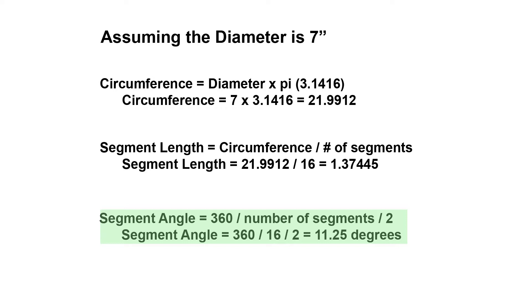This is because each segment will have two ends, which means there are actually 32 angles in a 16 segment ring. This means that the segment angle is equal to 360 degrees divided by 16 segments and then divided by two, giving us a segment angle of 11.25 degrees. I hope I'm explaining this clearly. Feel free to pause and replay this section as often as you like. I'm not a mathematician either.